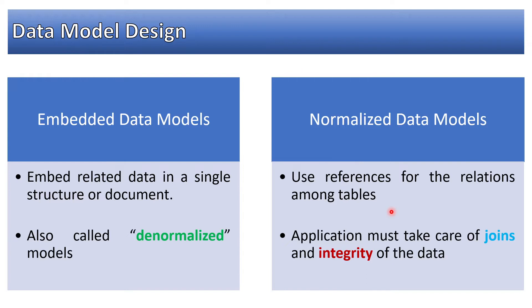There are no integrity constraints which can be applied across collections or across tables. In this case when we are talking about references, it is more or less like normalized data model which is one table referring the data in another table, which is primary key foreign key kind of relationships. In that case, if we go with this approach, application must take care of joins and integrity of the data. We will have to take care of all those things at the application level.